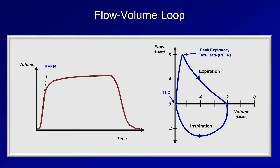The volume at the transition from maximum expiration to inspiration is the residual volume. Using only spirometry, it is impossible to know the absolute starting point of the flow-volume loop's x-axis — that is, the actual values of residual volume or total lung capacity. However, the difference between them is the forced vital capacity. Although the flow-volume loop may seem to provide no new information, the shape of the curve itself — irrespective of peak flow and FVC — can provide important insight into a variety of lung diseases, most prominently the different types of airway obstruction.